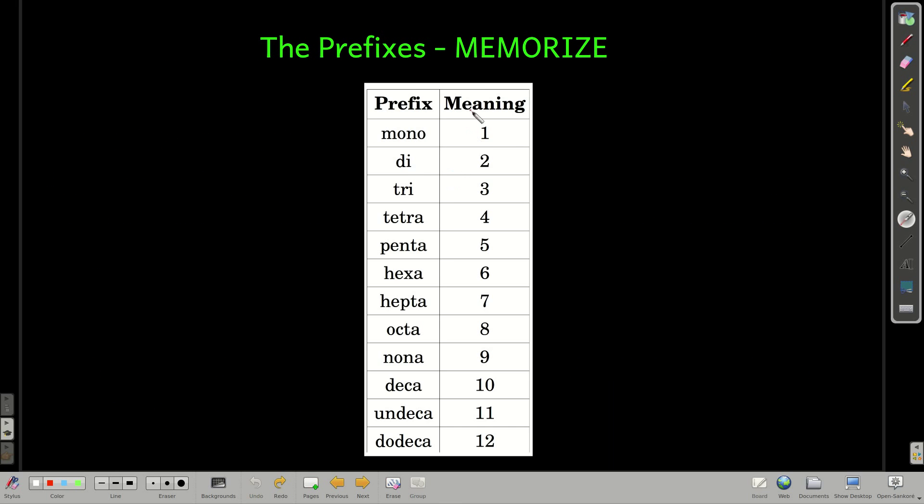Here are the prefixes. Memorize them. Mono, di, tri, etc. This is what they mean. So dodeca means there are 12 atoms of that element, for example.